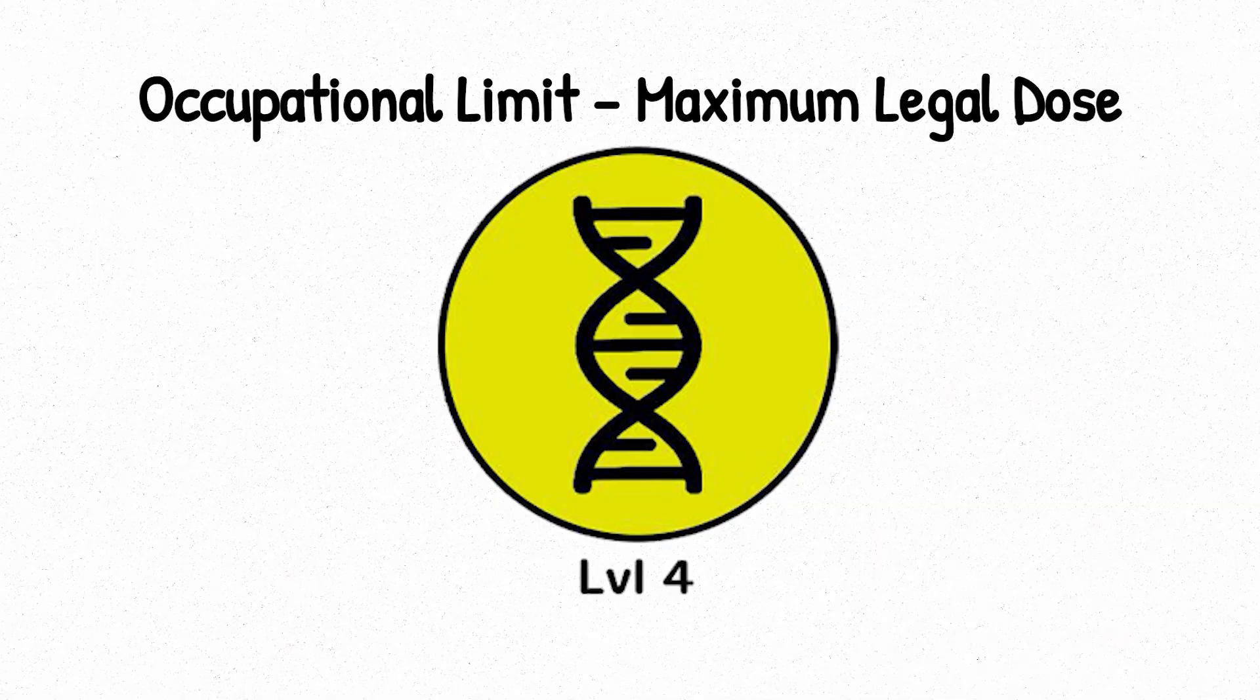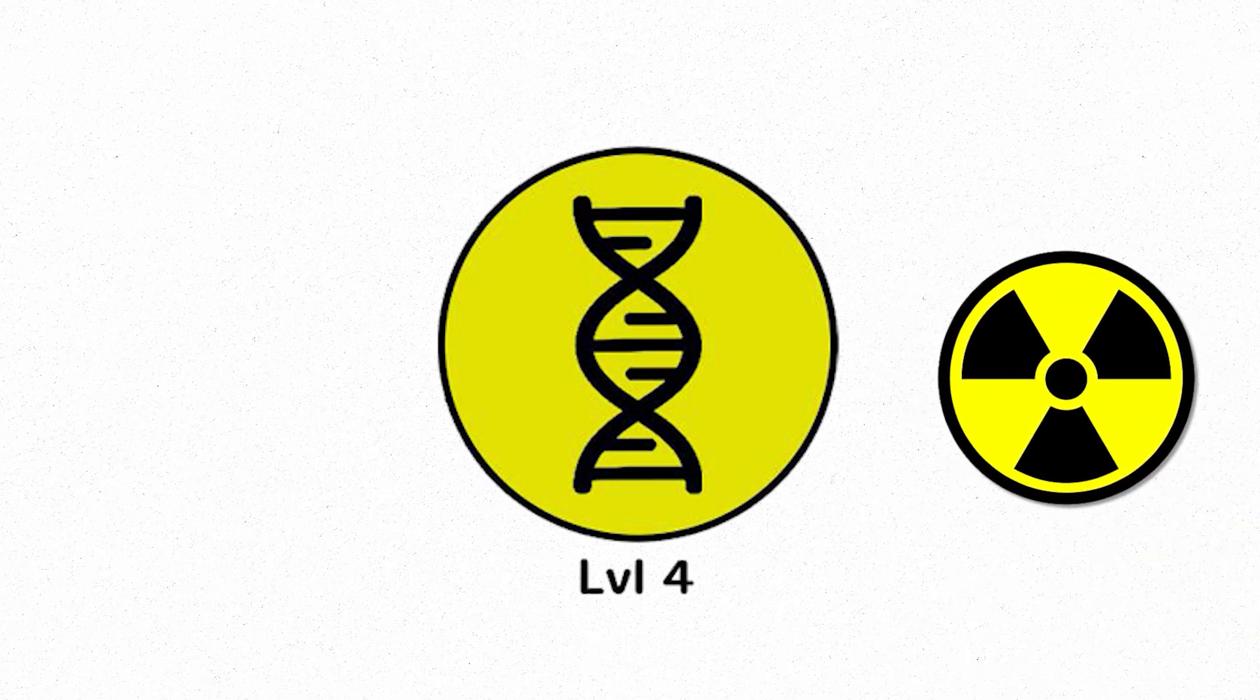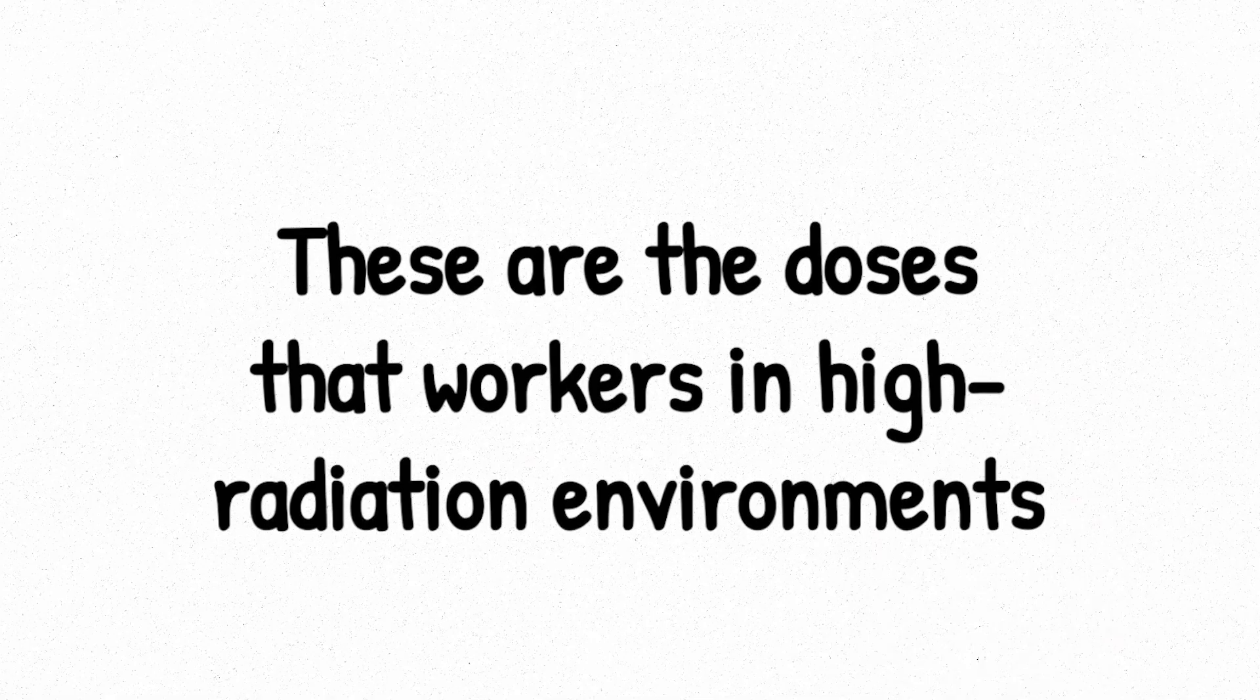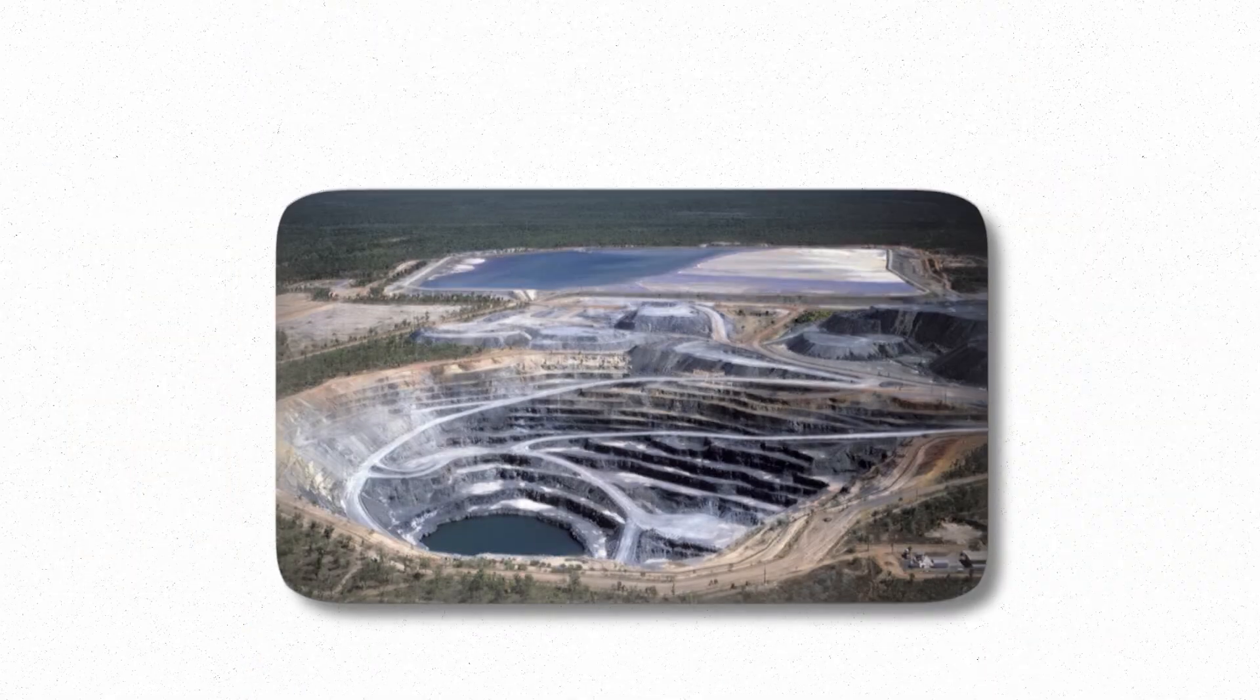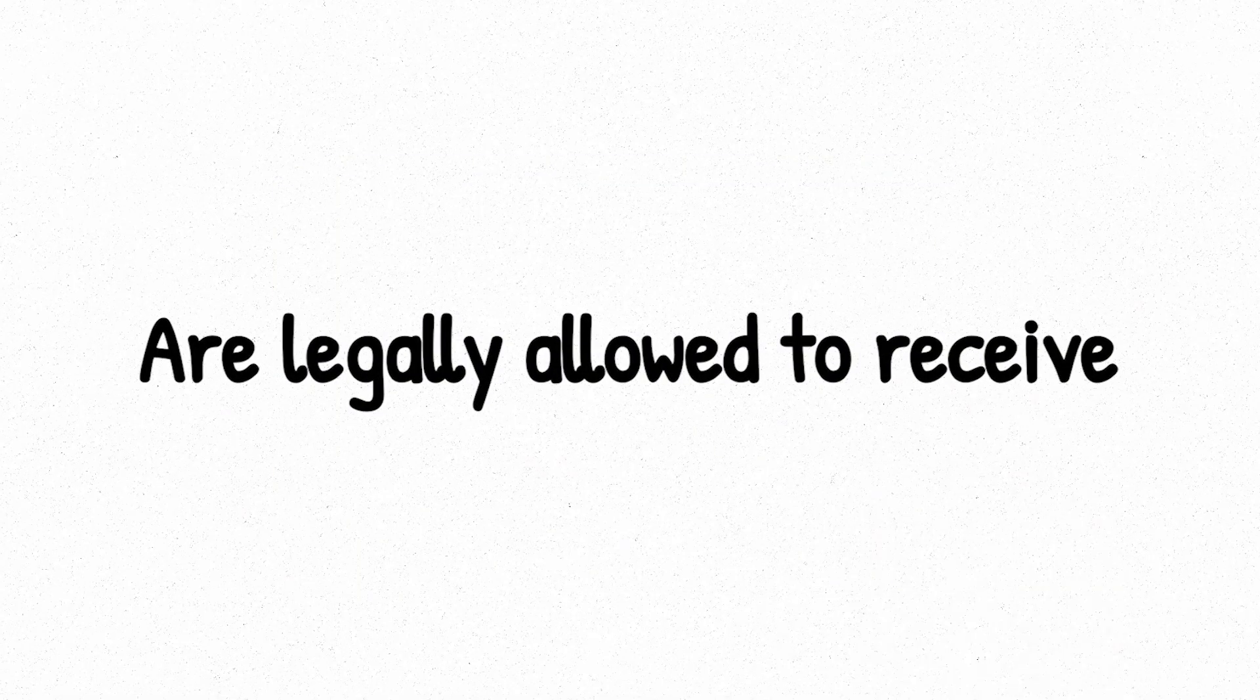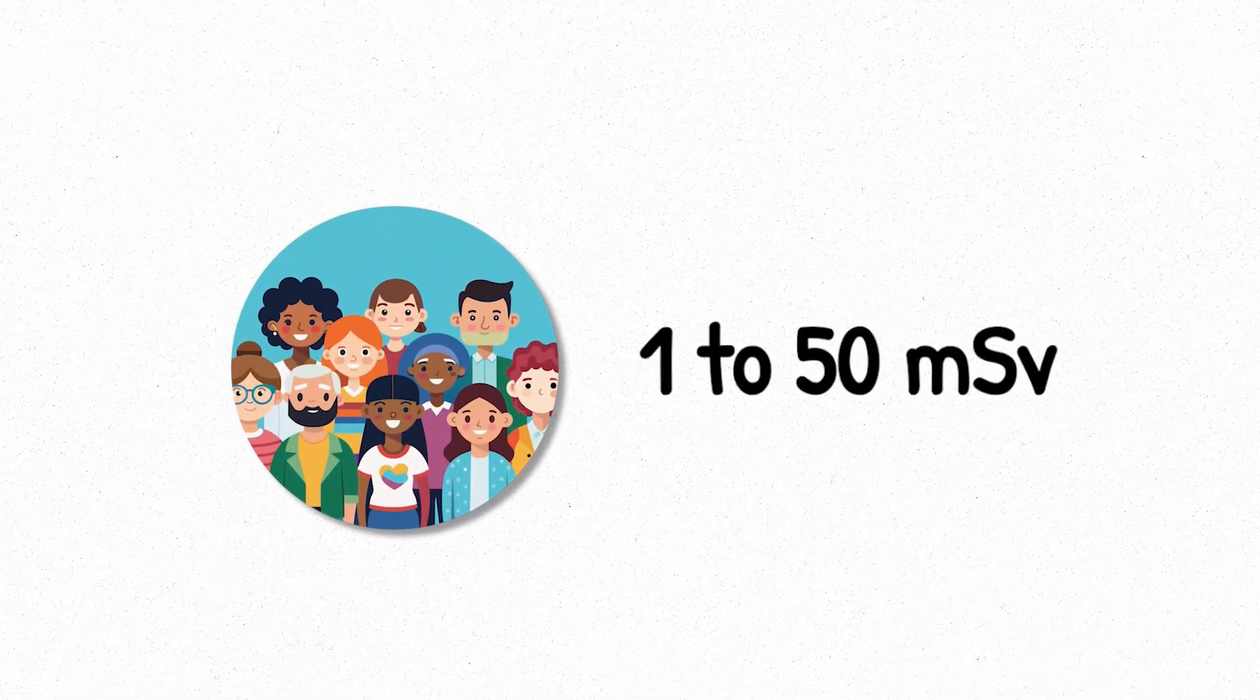Level 4. Occupational Limit. Maximum Legal Dose. At level 4, radiation crosses from incidental exposure into the realm of regulated risk. These are the doses that workers in high radiation environments, like nuclear power plants, medical facilities, or uranium mines, are legally allowed to receive. We're now in the 1 to 50 millisievert range, and the stakes are higher. To the human body, this level doesn't cause immediate symptoms. You won't feel sick. You won't burn. But what's happening at the cellular level is different.